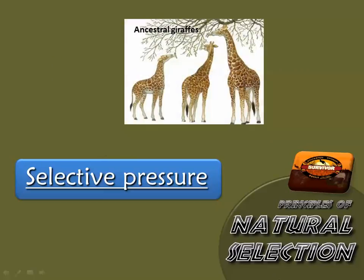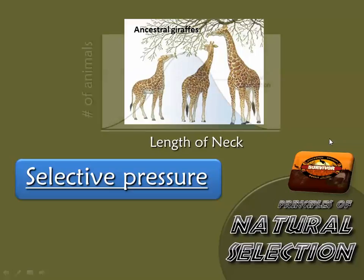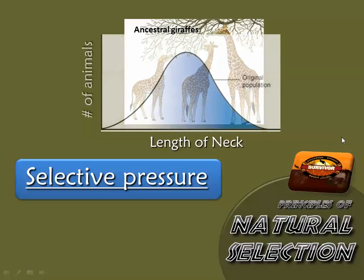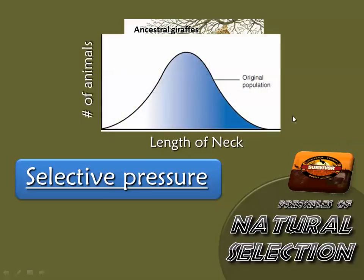Let's take a look at an example of ancestral giraffes — giraffes of various neck lengths. Some may have had short necks, some medium, some long. If you made a graph of the length of the giraffe's neck and the number of animals that had a neck that long, most giraffes probably had a medium neck, a few had shorter necks, and a few had longer necks.